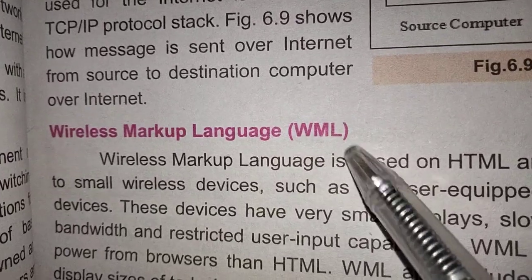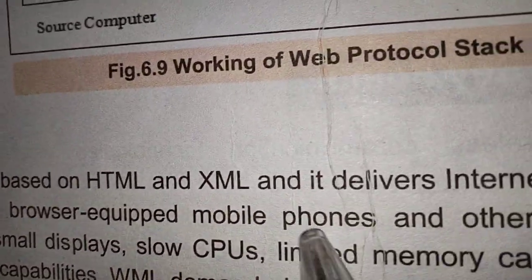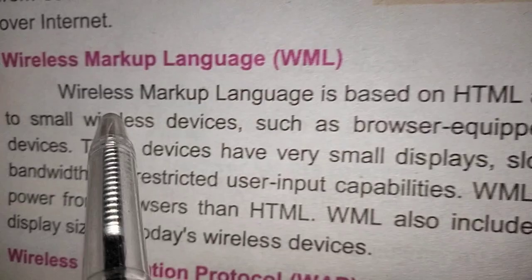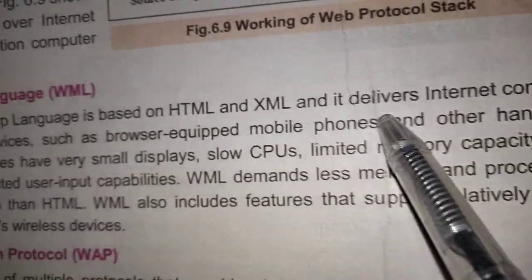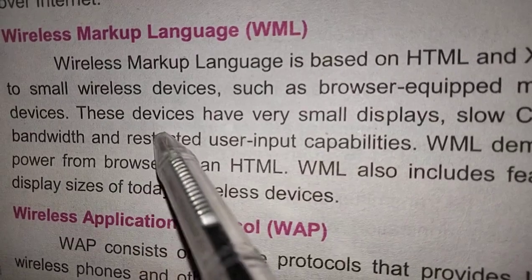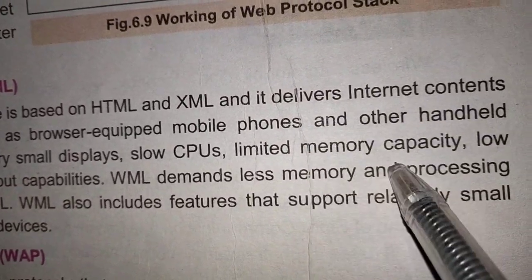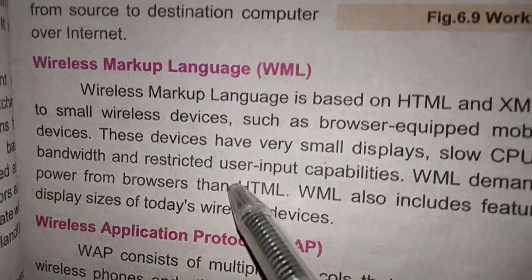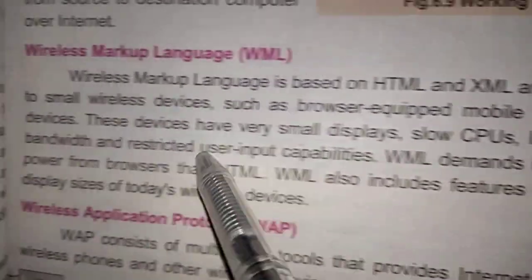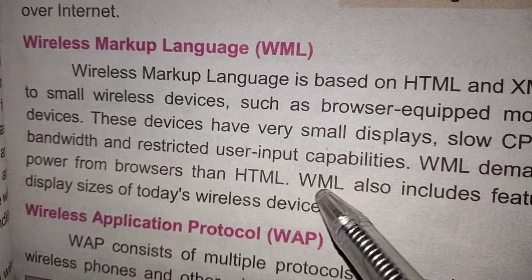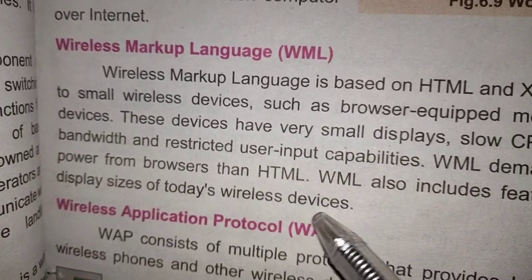Wireless Markup Language (WML) is based on HTML and XML, and it delivers internet content to small wireless devices such as browser-equipped mobile phones and other handheld devices. These devices have very small displays, slow CPUs, limited memory capacity, low bandwidth, and restricted user input capabilities. WML demands less memory and processing power from the browser than HTML. WML also includes features that support the relatively small display sizes of today's wireless devices.